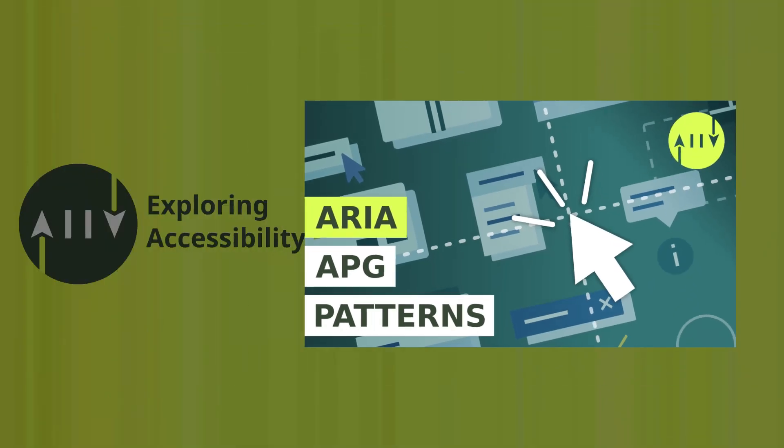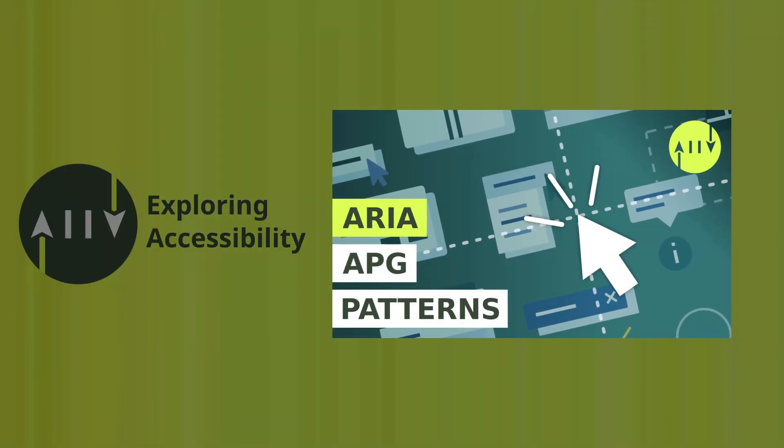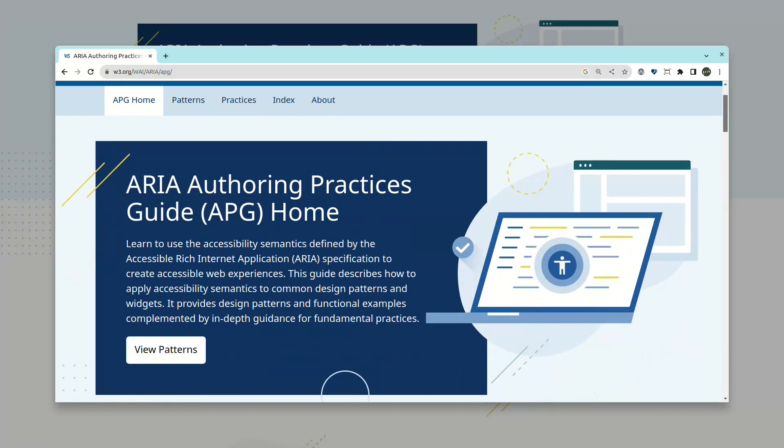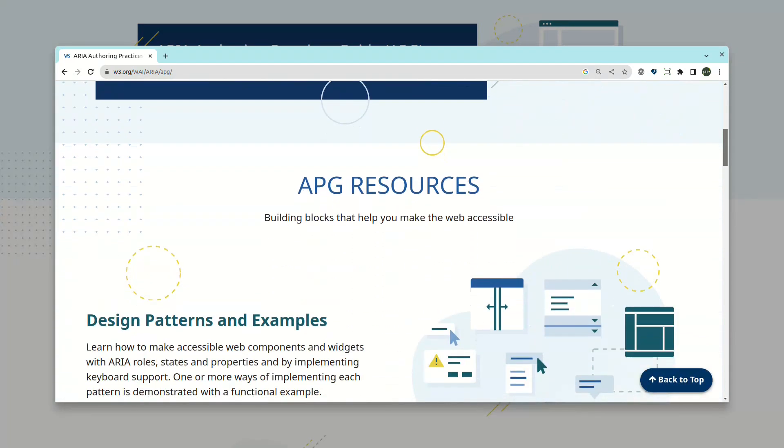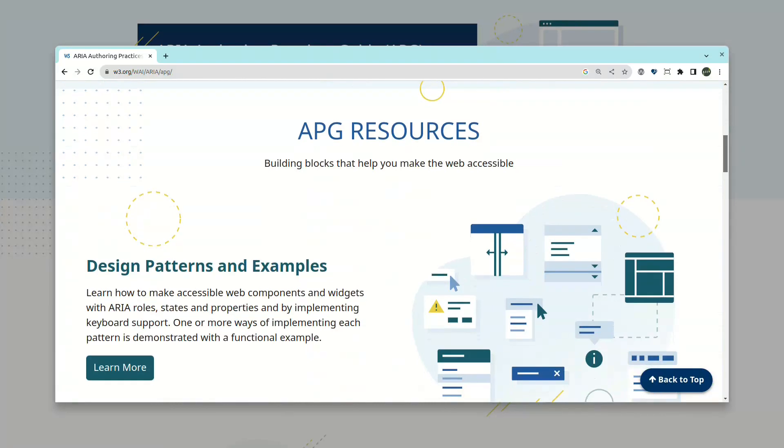Fourth, anything with a role should be focusable. If your developers have used the role attribute anywhere in their pages, you need to identify those components and make sure they conform to the keyboard requirements of those roles. This can be done by going to the Authoring Practices Guide, or APG for short. In addition to keyboard controls, there is expected state handling and CSS styling which needs to be implemented if you create any of these roles yourself. All of this information can be found on the APG website — see the link below in the description for more information.